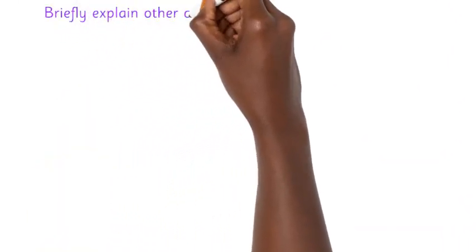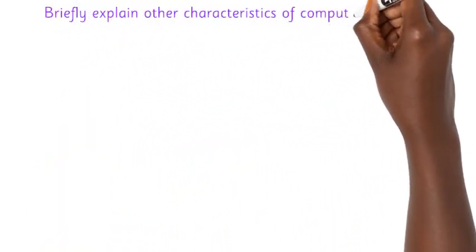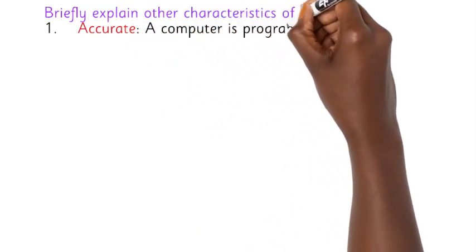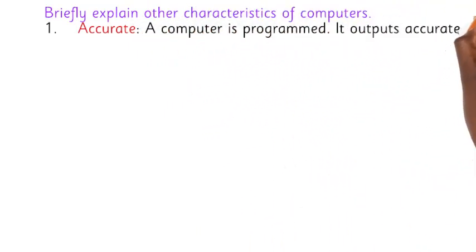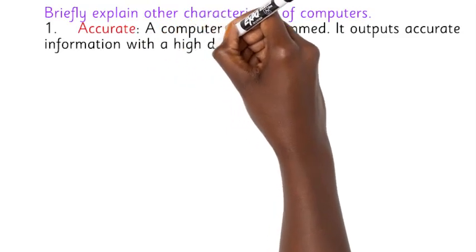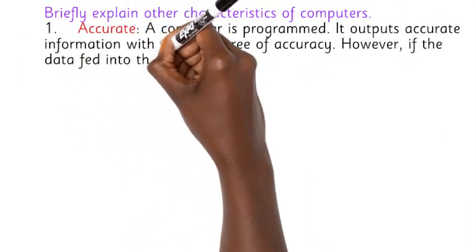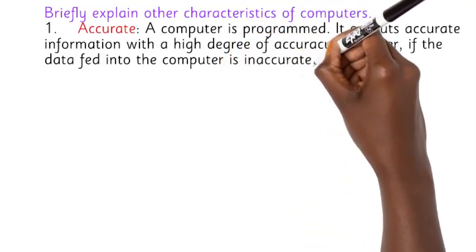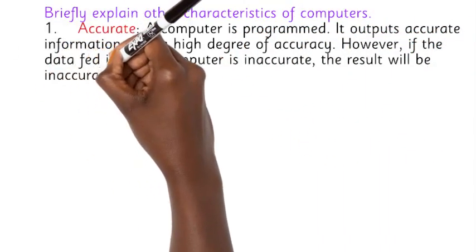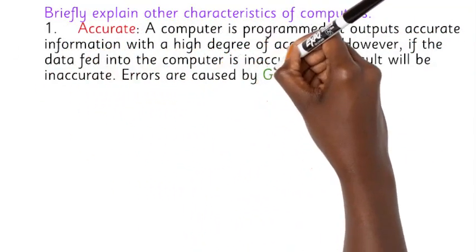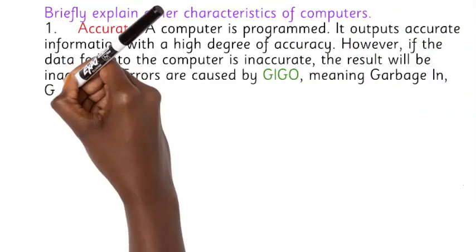Briefly explain other characteristics of computers. 1. Accurate. A computer is programmed. It outputs accurate information with a high degree of accuracy. However, if the data fed into the computer is inaccurate, the result will be inaccurate. Errors are caused by GIGO, meaning garbage in, garbage out.